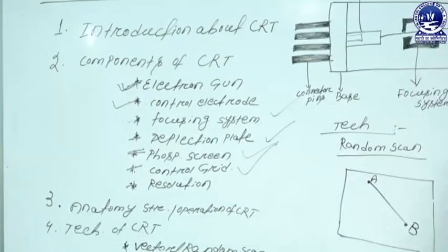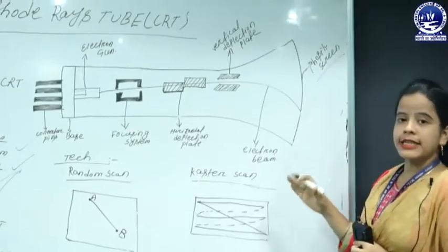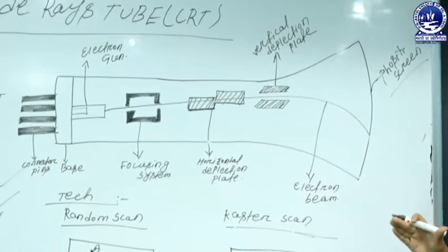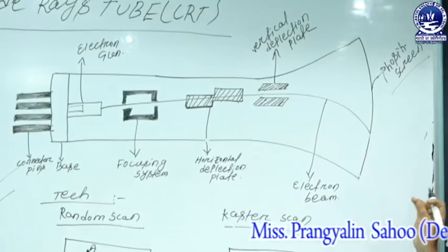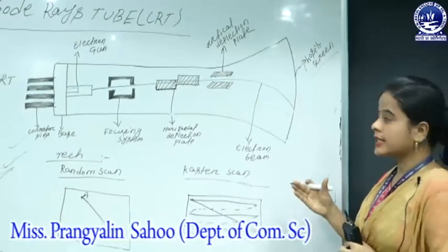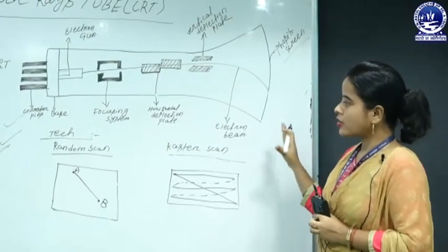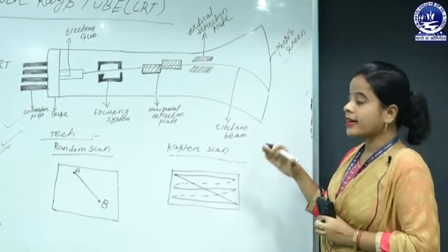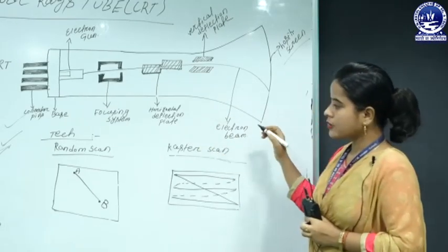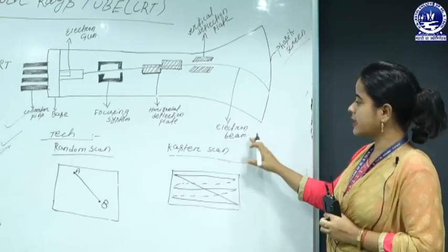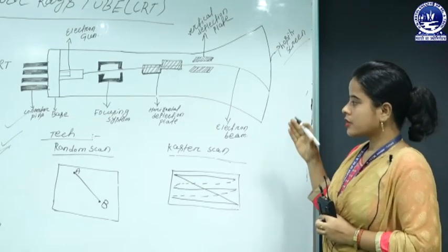Now going to the next component — that is your control grid. Generally, the control grid is used when the intensity of a particular graphical image is controlled through its voltage. The control grid is used for controlling the intensity of voltage of graphical elements. When the electric voltage is very high negative, the electron beam is turned off. When the control grid voltage is very low negative, some of the electrons may be eliminated.